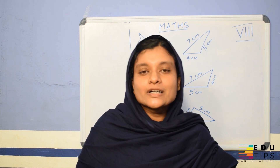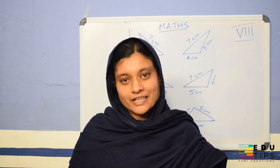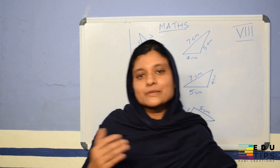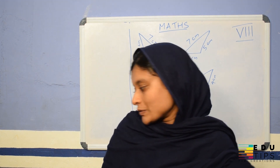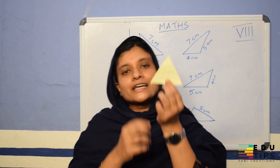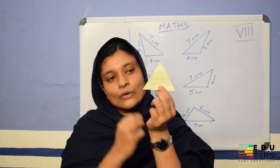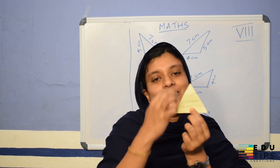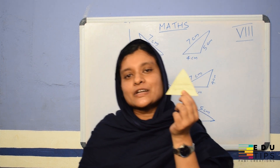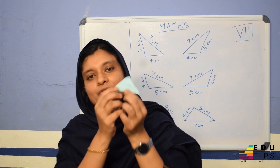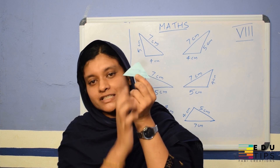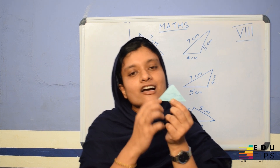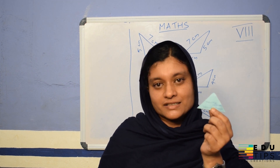Let's look at the triangles. All sides of these triangles are equal. These types of triangles are called equilateral triangles. A triangle with two sides equal is called an isosceles triangle.